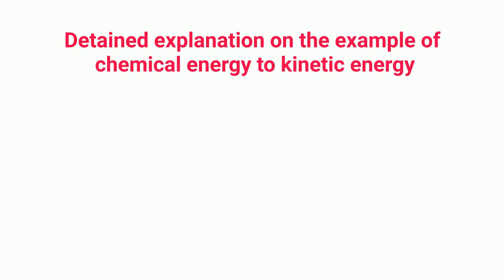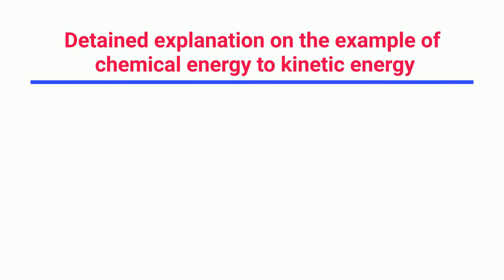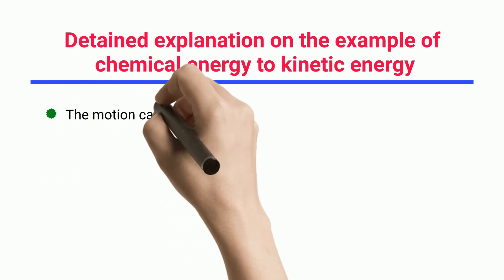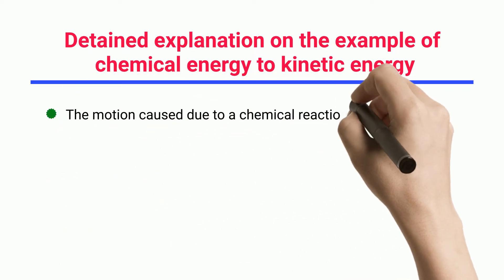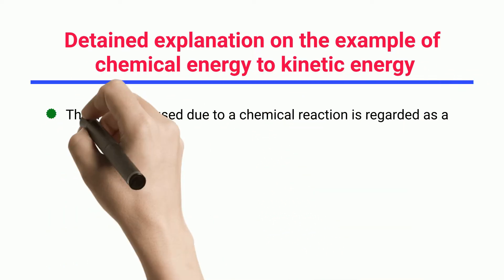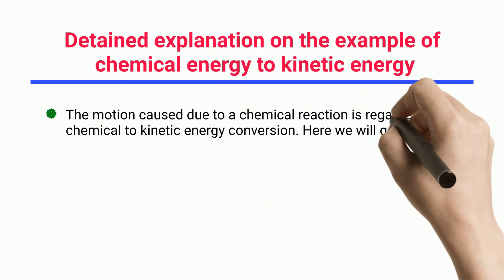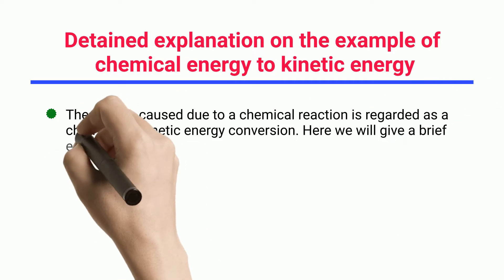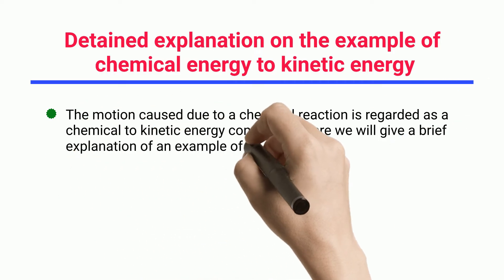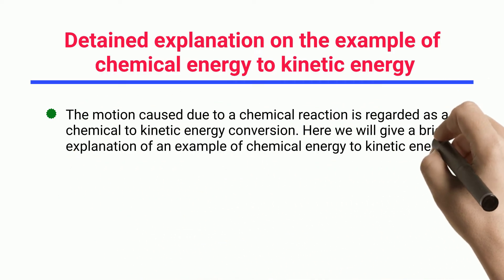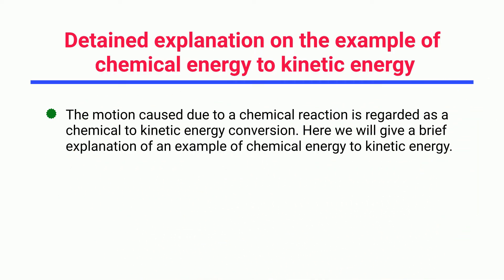Detailed explanation on the example of chemical energy to kinetic energy. The motion caused due to a chemical reaction is regarded as a chemical to kinetic energy conversion. Here we will give a brief explanation of examples of chemical energy to kinetic energy.